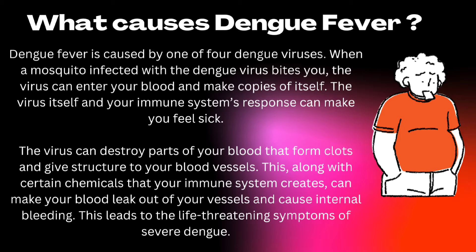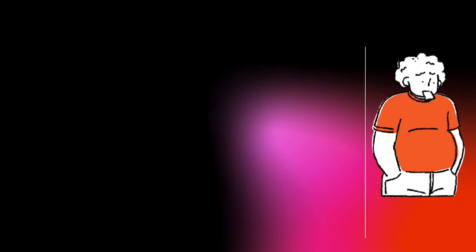This, along with certain chemicals that your immune system creates, can make your blood leak out of your vessels and cause internal bleeding. This leads to the life-threatening symptoms of severe Dengue.